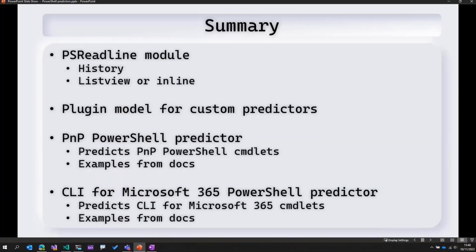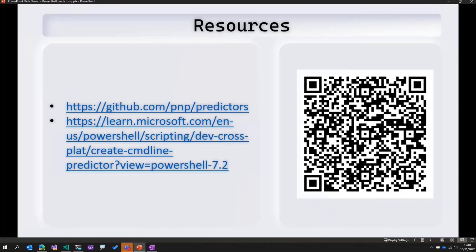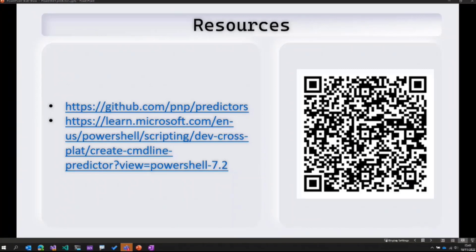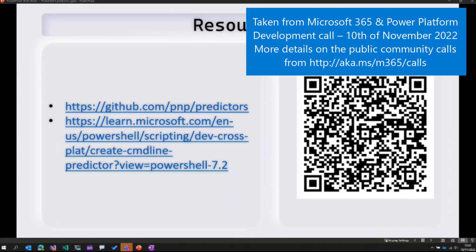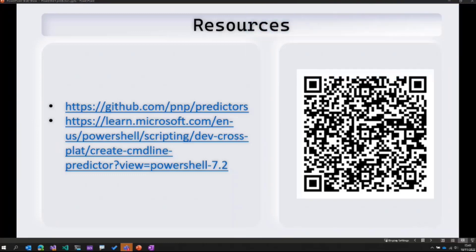So that was the demo. In summary, I showed you the PS ReadLine module, which helps us in showing the history — that's just one capability, and there are others in the documentation. The PS ReadLine module provides the ability to extend it so that we can show custom predictors. We looked at two custom predictors: the PNP PowerShell custom predictor and the CLI for Microsoft 365 predictor. Here are some links that can be used to look at the predictors. I'll hand it over to David again — thank you very much, everyone. Awesome — this is super cool. All the time savings it provides definitely add up. There was some mention that the repo might still be set as private, so we'll look into that and get that taken care of. Really awesome stuff — can't wait to see where this goes.